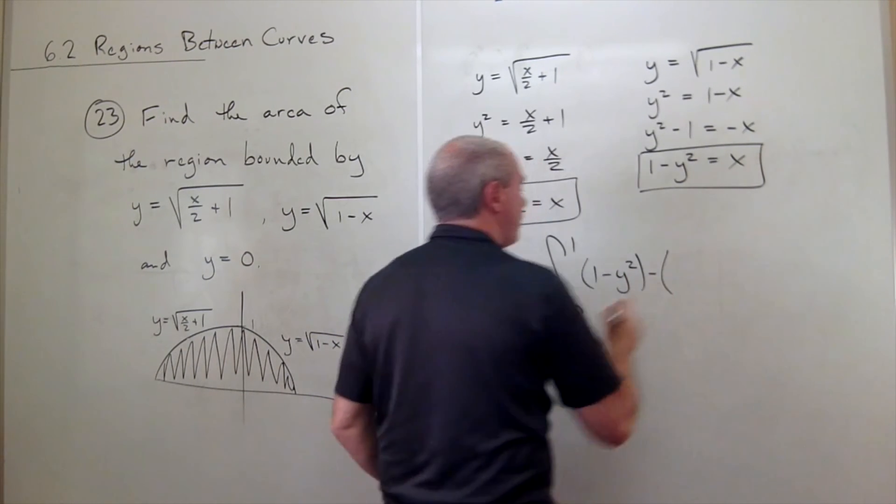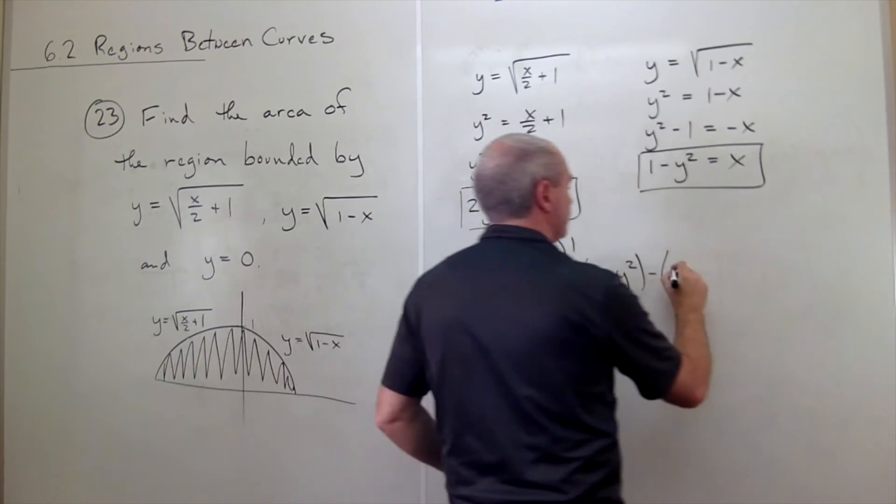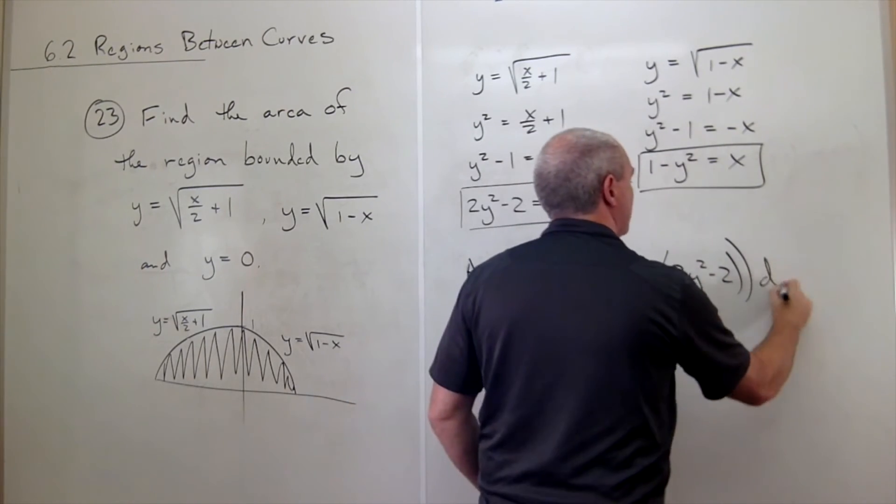minus the bottom function, which is 2y squared minus 2. 2y squared minus 2, all of that dy.